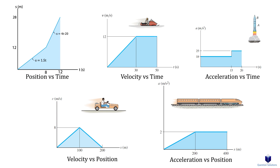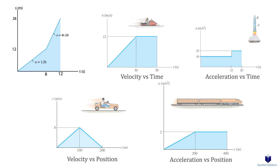There are five types of graphs you could be given, and I will explain how to solve each of them. If you aren't given a graph, then it's still the same principle — you're just given the equations instead, or enough data to come up with your own equations.